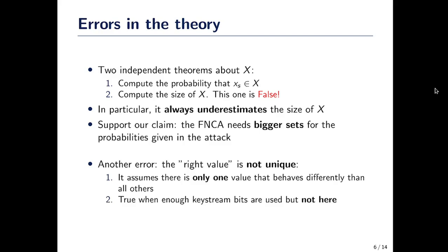Basically, we think the central error in the reasoning is that they assume there is only one good value for the internal state, which is true — but only when you use enough keystream bits. Whereas in the attack, they use a very small number of keystream bits, something like five or 20 keystream bits — a really small number — which explains why they have this difference in probability.